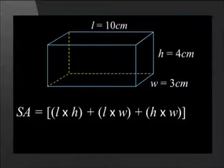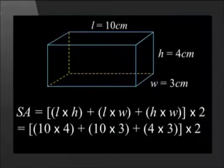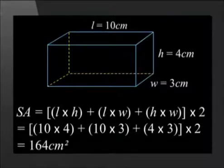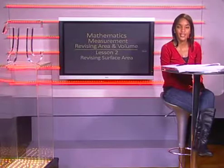Now let's calculate the total surface area by calculating the surface area of each face and adding them together. We know that the opposite faces have equal areas, so we can just calculate the area of 3 different faces and double the total. We have length times height, plus length times width, plus height times width as the areas of 3 different faces. We find the total and double it. Substituting in the given values gives a total surface area of 164 cm². As you can see, both methods gave us the same answer.